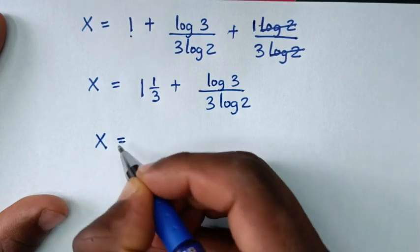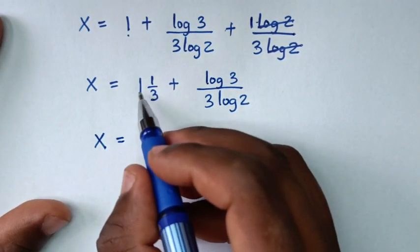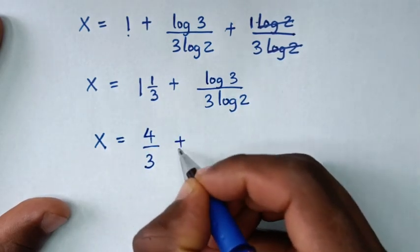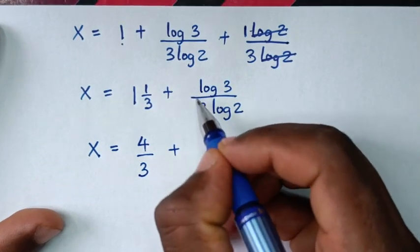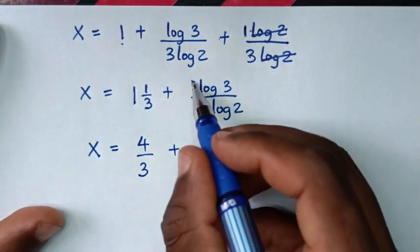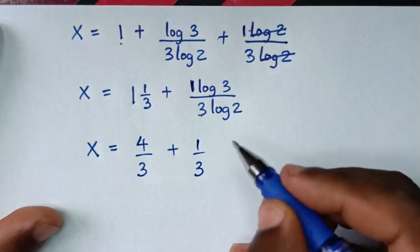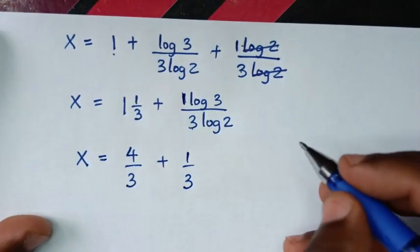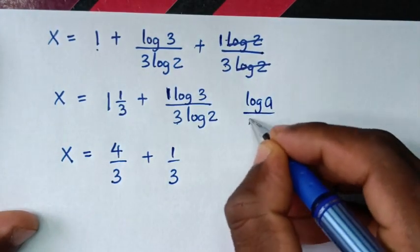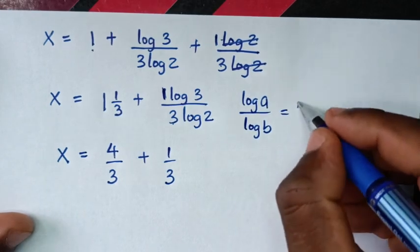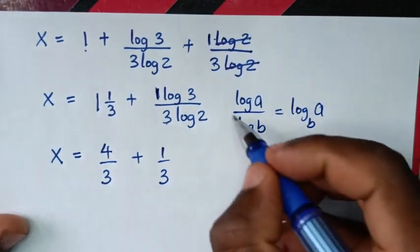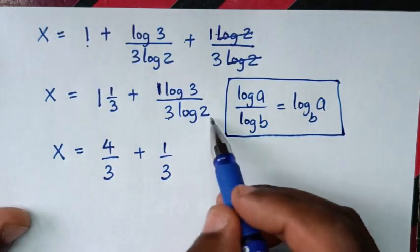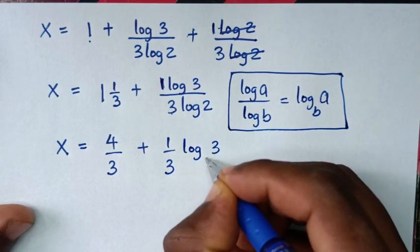Then it will be x is equal to — here 3 times 1 is 3, 3 plus 1 is 4, so 4 over 3 as an improper fraction, plus 1 over 3 times log of 3 over log of 2. Now log of 3 over log of 2 is in the form of log of a over log of b, which is equal to log of a base b. So log of 3 over log of 2 is the same as log of 3 base 2. So x is equal to 4 over 3 plus 1 over 3 log of 3 base 2, and this is the final answer.